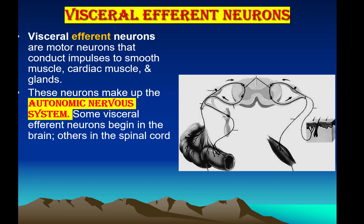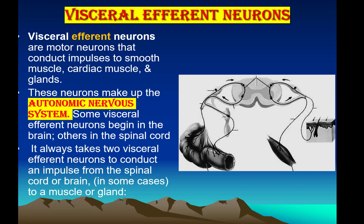As discussed previously, motor neurons are either somatic or autonomic. The Autonomic Nervous System is constituted by the visceral efferent neurons. It always takes two visceral efferent neurons to conduct an impulse from the spinal cord or brain to a muscle or gland.